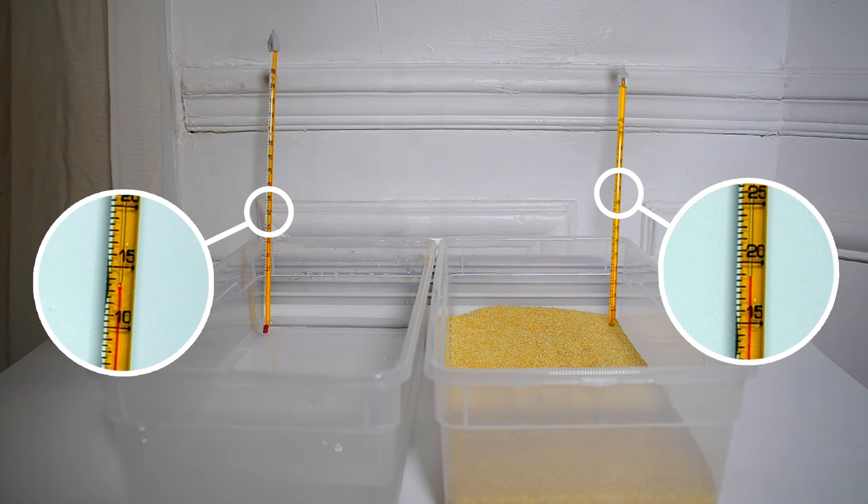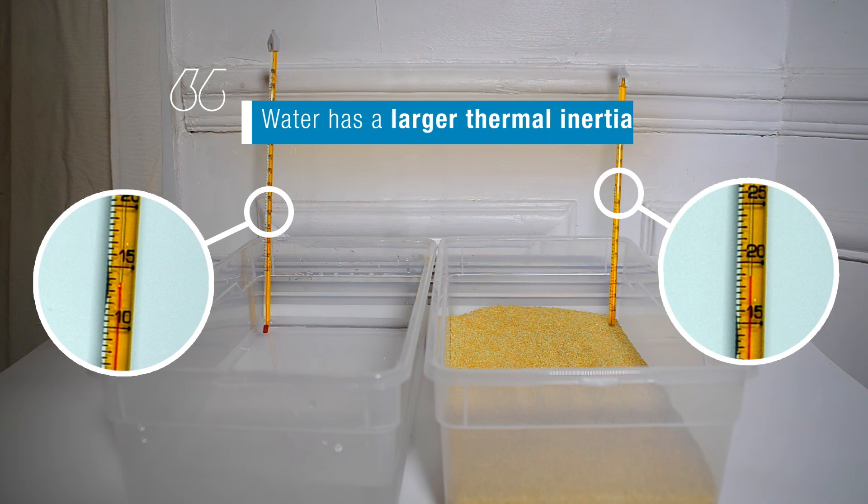Inertia is a property of all physical substances to resist change. And we observed that liquid water has a large inertia with respect to changes in temperature. We say it has a large thermal inertia.